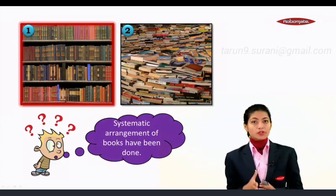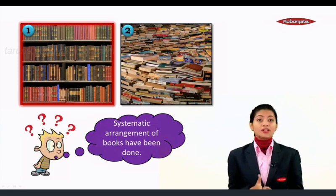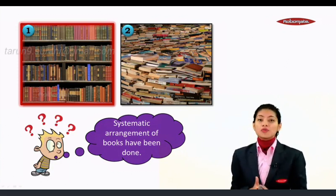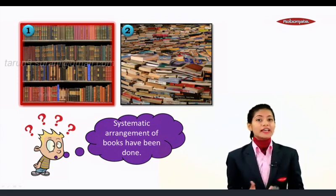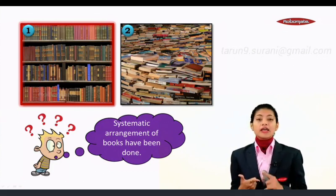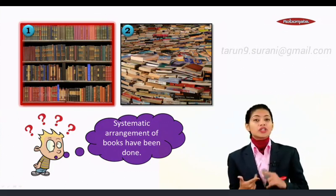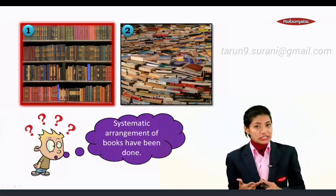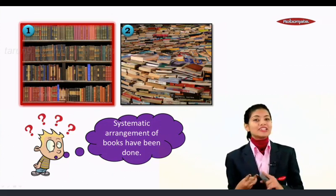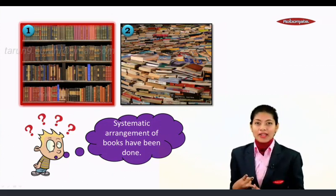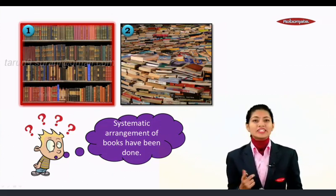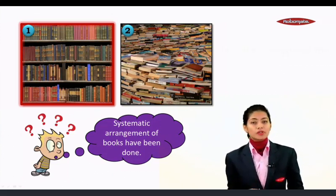Nowadays in modern libraries the books are arranged as per genres, and they are arranged according to the name of the author — and even the authors' names are arranged in alphabetical order. So it becomes quite easy to pick that one book.